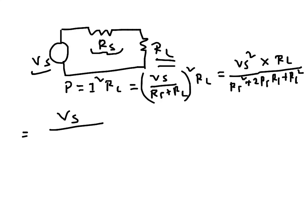So if I take that one down it becomes Vs squared over 2 RS over RL plus 2 RS plus RL.